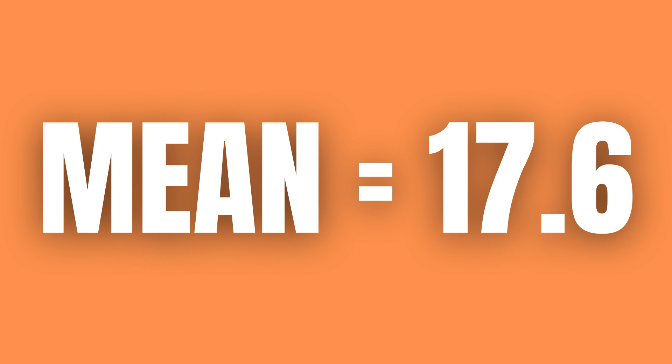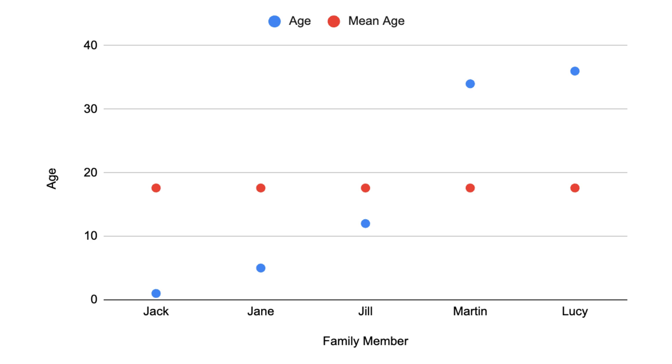So this is the average age of the family and we can add this mean, or average age, as a comparison point to the other ages in our plot.